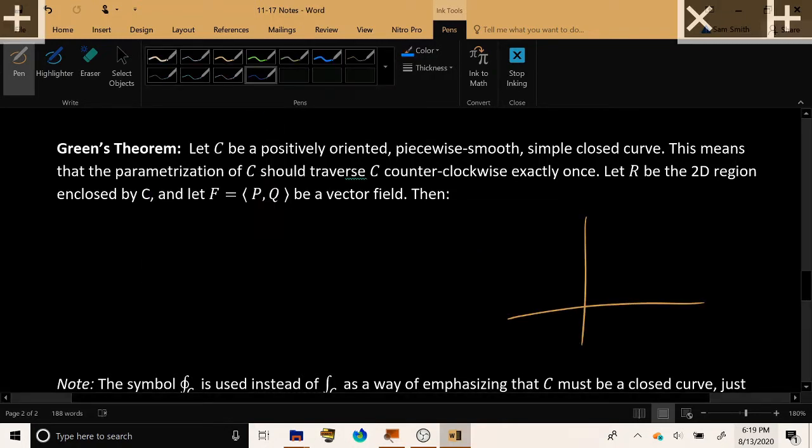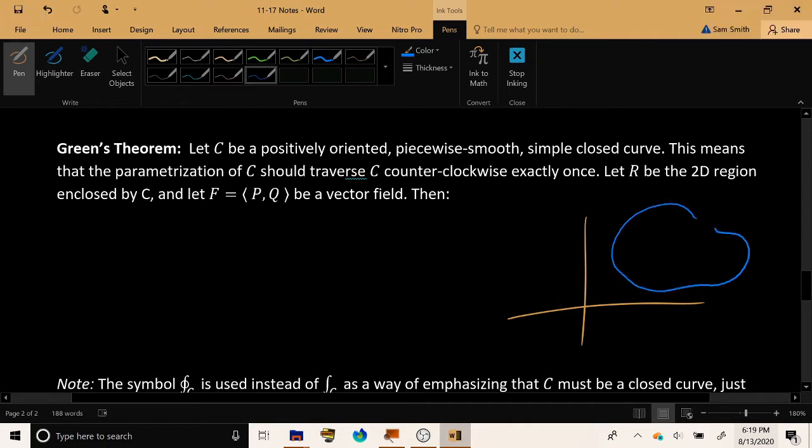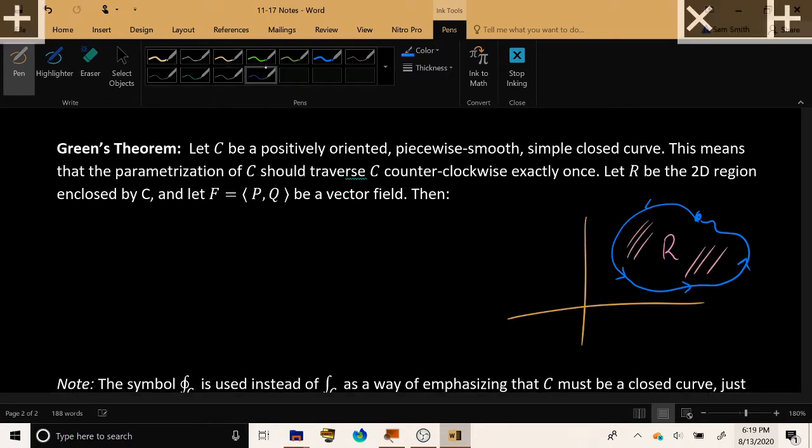So let's just get a quick sketch going. We get a closed curve C in the plane, let's call it this, which is being traversed counterclockwise. And then we have some region R which is enclosed by C. So C is this one-dimensional object on the outside and R is this two-dimensional region contained on the inside.